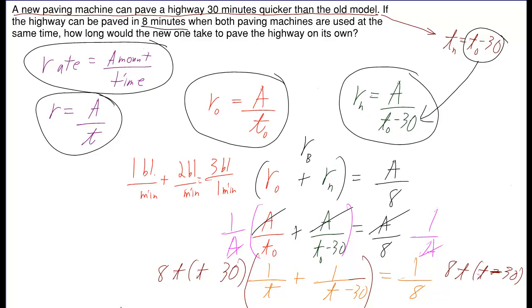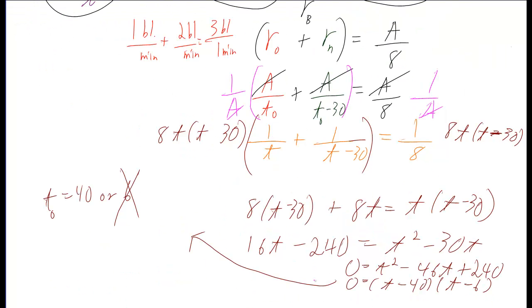The next thing I did in brown here is I multiplied everything by the LCD. Well how did I find the LCD? Eight T, T minus thirty. All right. Most of the rest of the steps should be pretty straightforward.